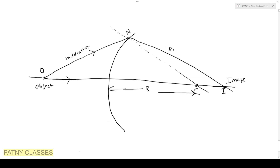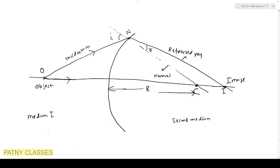The angle between the normal and the refracted ray is R — that is the angle of refraction. The angle between the incident ray and the normal is the angle of incidence. The left side is the first medium with refractive index N1, and the right side is the second medium with refractive index N2.